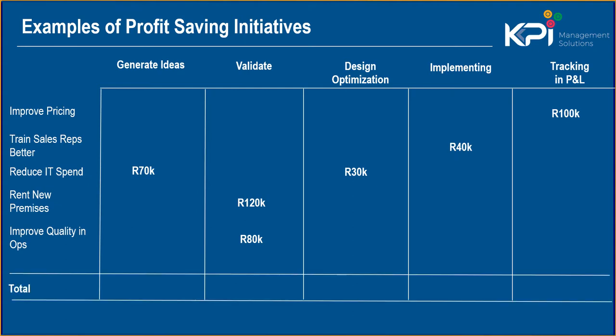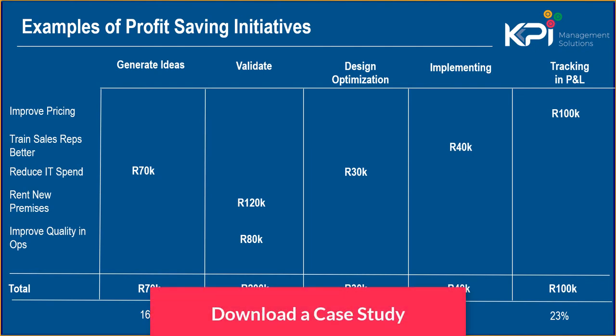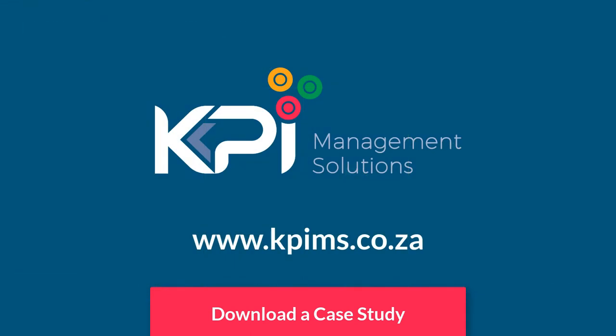We tally each of those up and every week we present this funnel back to the team. It's a collective strategy — everybody's aligned, everybody sees the numbers, everyone wants to see those numbers move across. When you've seen the numbers move across the page, even if it's from column one to column two, there's an energy created that builds momentum and you start creating a performance culture — until eventually you've got a ton of projects listed and you're moving those values across the page and into your financial statements.